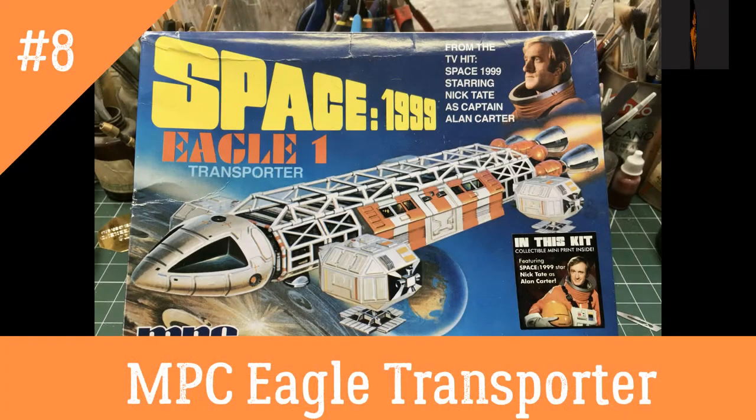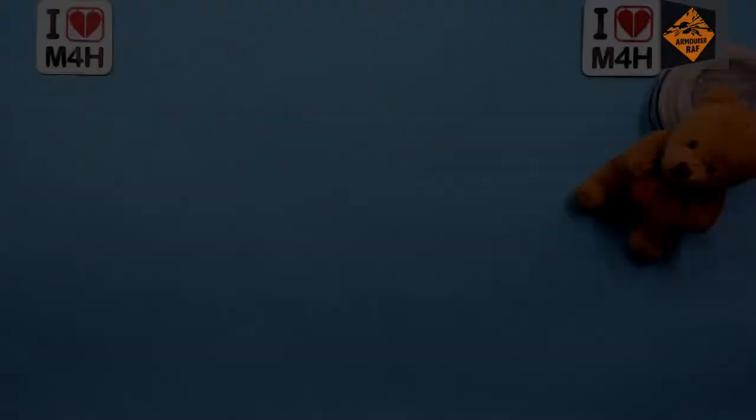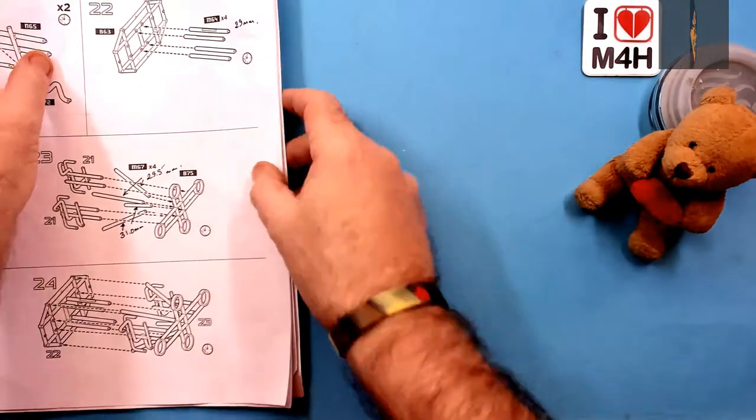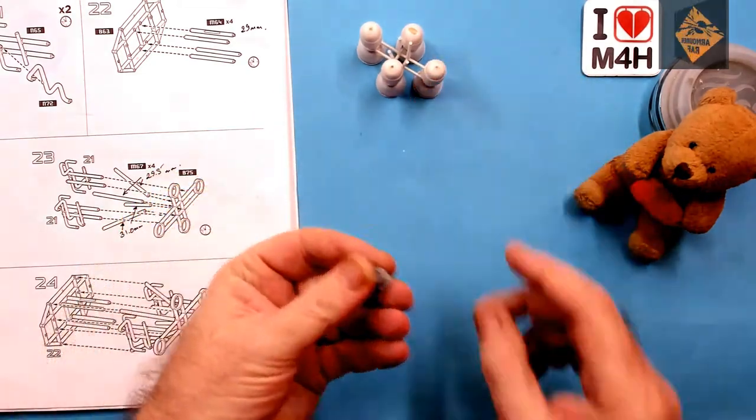Hello, I'm the Budget Modeler and welcome to episode 8 of my Space 1999 Eagle One transport build. Here I'm looking at the supports for the rocket motor assembly and I'm going to be attempting to attach them now.